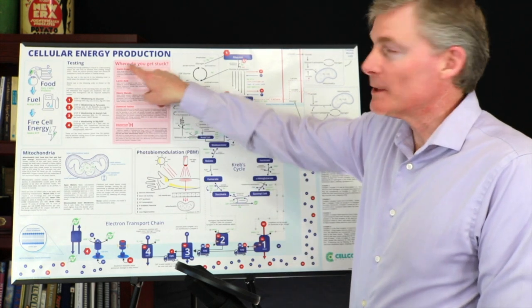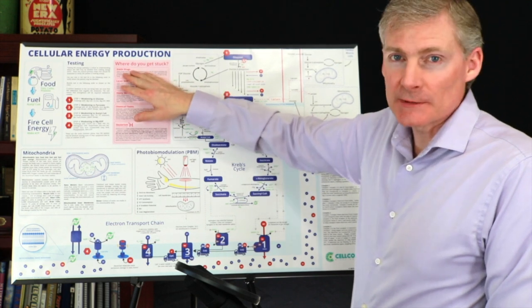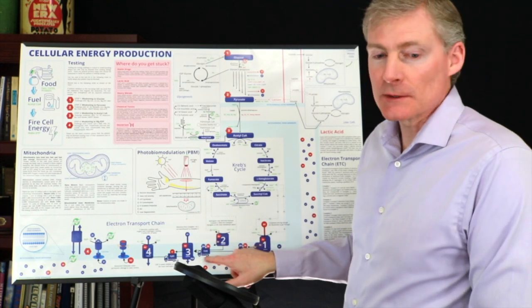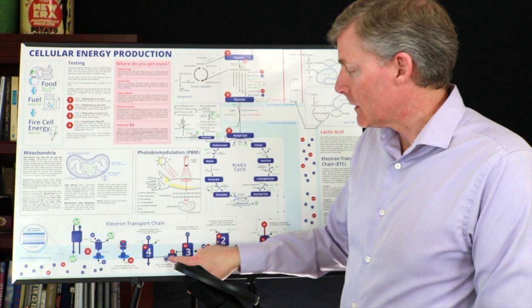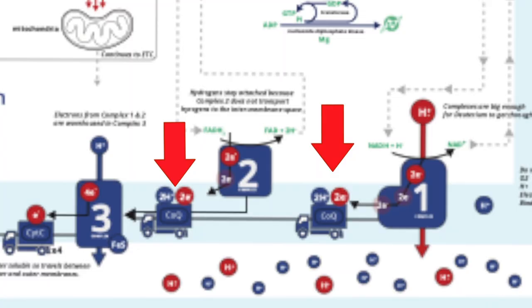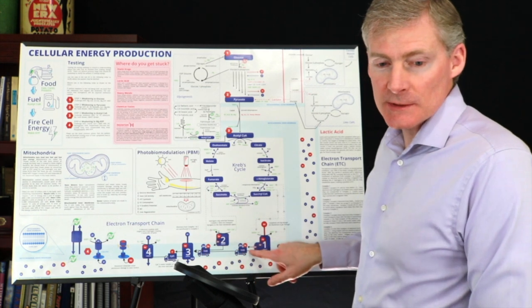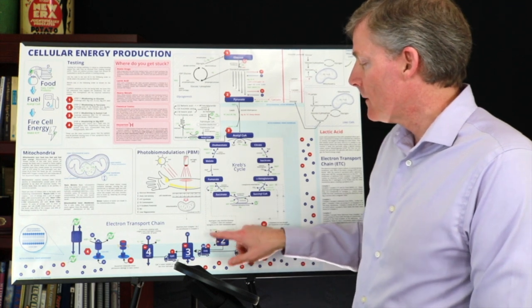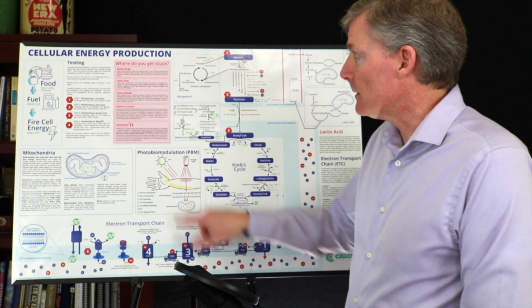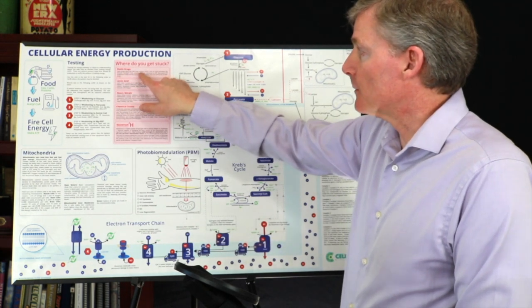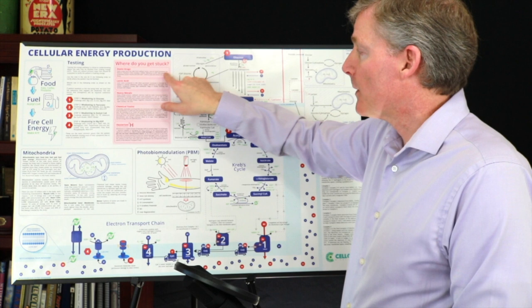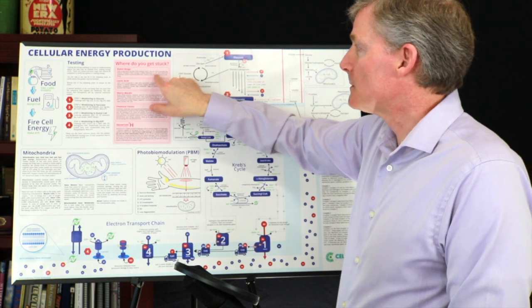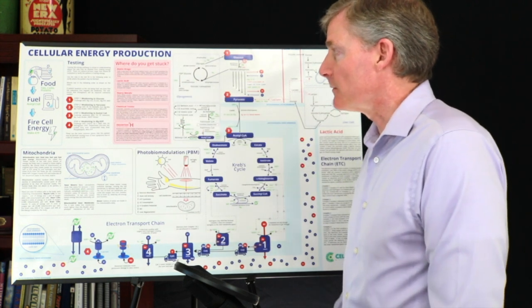This box right here talks about where do you get stuck. It says statin drugs can damage this process, especially with CoQ10. Right here, it's a little tiny truck. These two trucks, it says CoQ10 right on them, and they carry electrons and hydrogen from cytochrome one to three and from two to three. Statin drugs block the cells from making CoQ10. Loss of CoQ10 paralyzes the electron transport chain, causing a cellular deficiency in ATP. Decreased ATP production causes muscle and joint pain, memory loss, and overall loss of well-being.